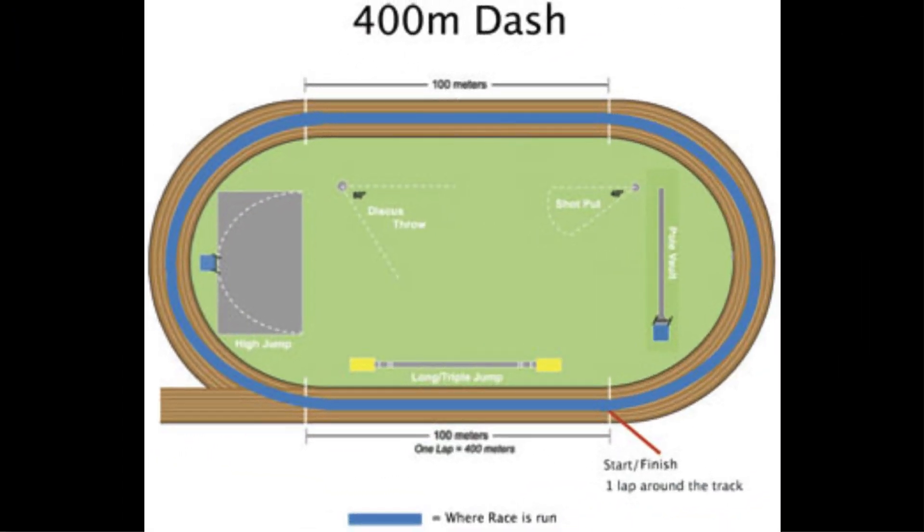Speed is the distance covered by an athlete in a specified time, so it is different to velocity. Velocity is displacement, whereas speed is the distance covered. If you think of the 400 metre race, from start to finish, an athlete's velocity is zero because their displacement is zero — they're back at the beginning. Whereas their speed will be very different because they have covered 400 metres, so speed is a better measure there, not velocity. It is advantageous in performance to have high speeds, particularly in races, but also in many invasion games as it allows you to run around an opposing player.